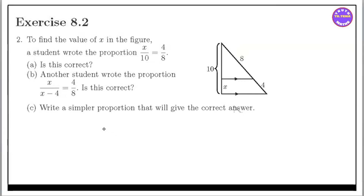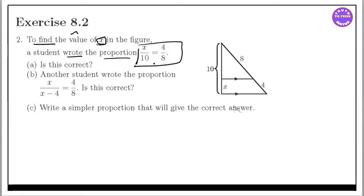That's why we start Exercise 8.2, number 2. Number 2 is to find the values of x — the values of x in the figure. A student wrote the proportion of the proportion. If you are able to write the values of x in the figure, then you will find the right values. The answer is x by 10.